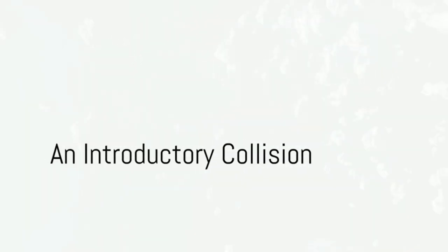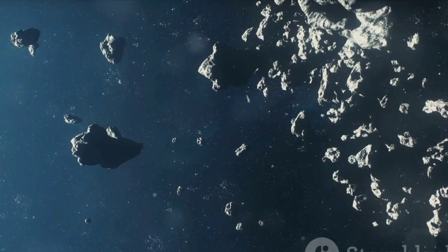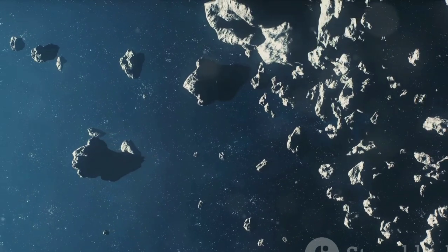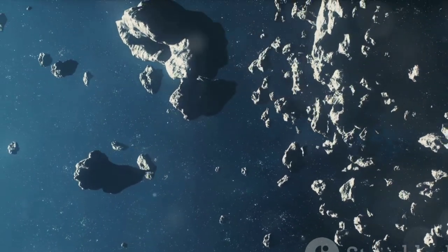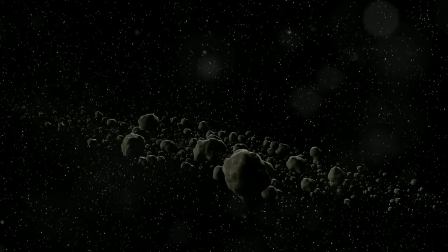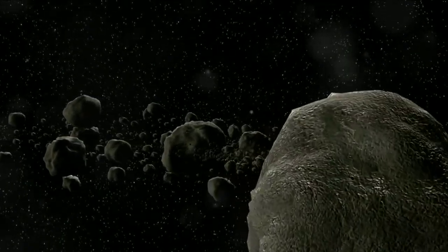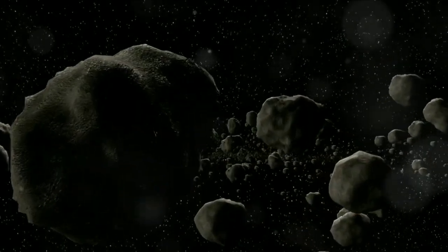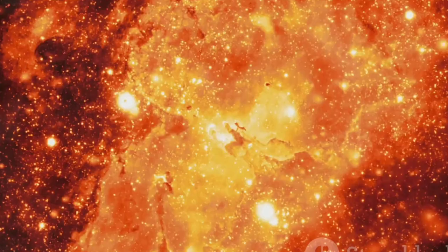Ever wondered what happens when an asteroid collides with another celestial body? Picture this: celestial nomads known as asteroids meandering through the vast expanse of space. These space rocks, varying in size from a pebble to a mountain, often cross paths with planets, moons, and each other.